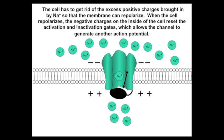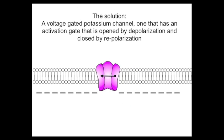When the cell repolarizes, the negative charges on the inside of the cell reset the activation and inactivation gates, which allows the channel to generate another action potential. The solution is a new type of potassium channel — a voltage-gated potassium channel — one that has an activation gate that is opened by depolarization and closed by repolarization.